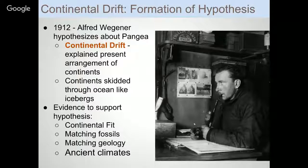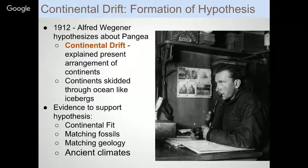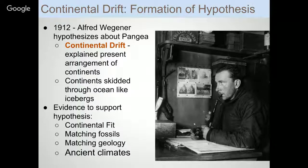One of the most notable hypotheses came in 1912, which is fairly recent for science. Alfred Wegener came up with the idea of Pangaea — a supercontinent where all of the other continents on the planet were combined into one large landmass. He explained that we no longer have Pangaea because of something he called continental drift.